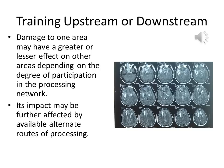In this client case, imaging indicates left frontal dorsolateral damage from a severe TBI. QEEG analysis showed significantly elevated delta and theta in this region, but training results from this region were discouraging. Damage to one area may have a greater or lesser effect on other areas depending on the degree of participation in the entire processing network. Its impact may be further affected by available alternate routes of processing.